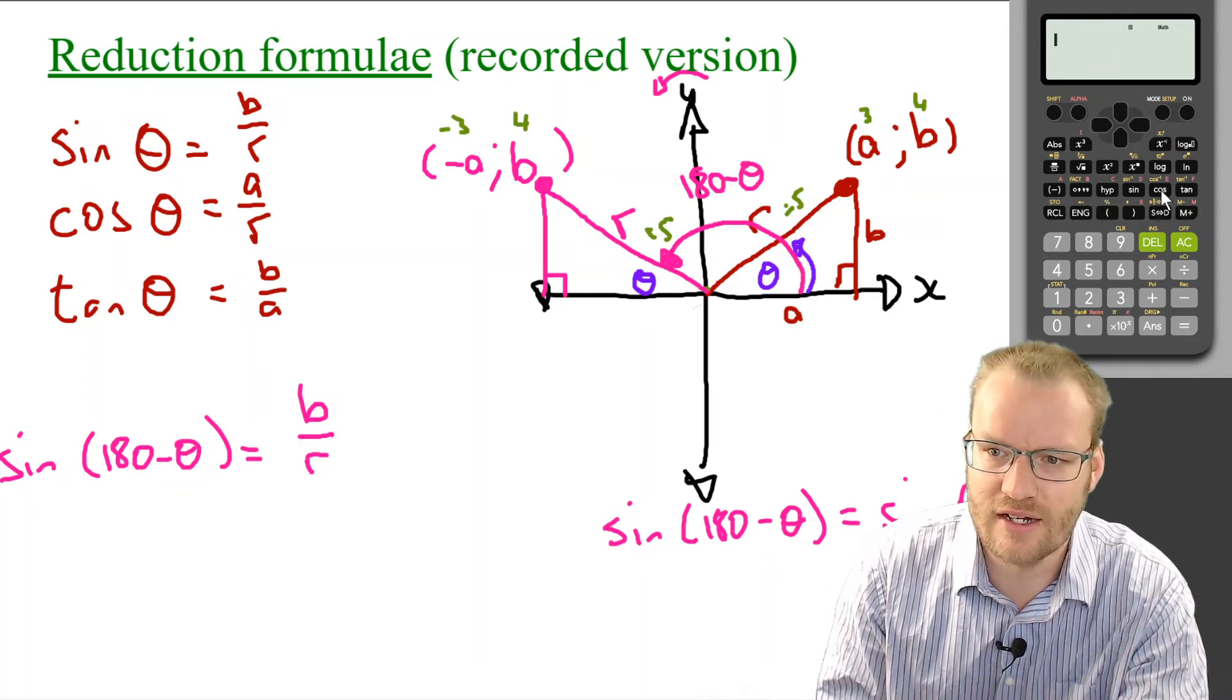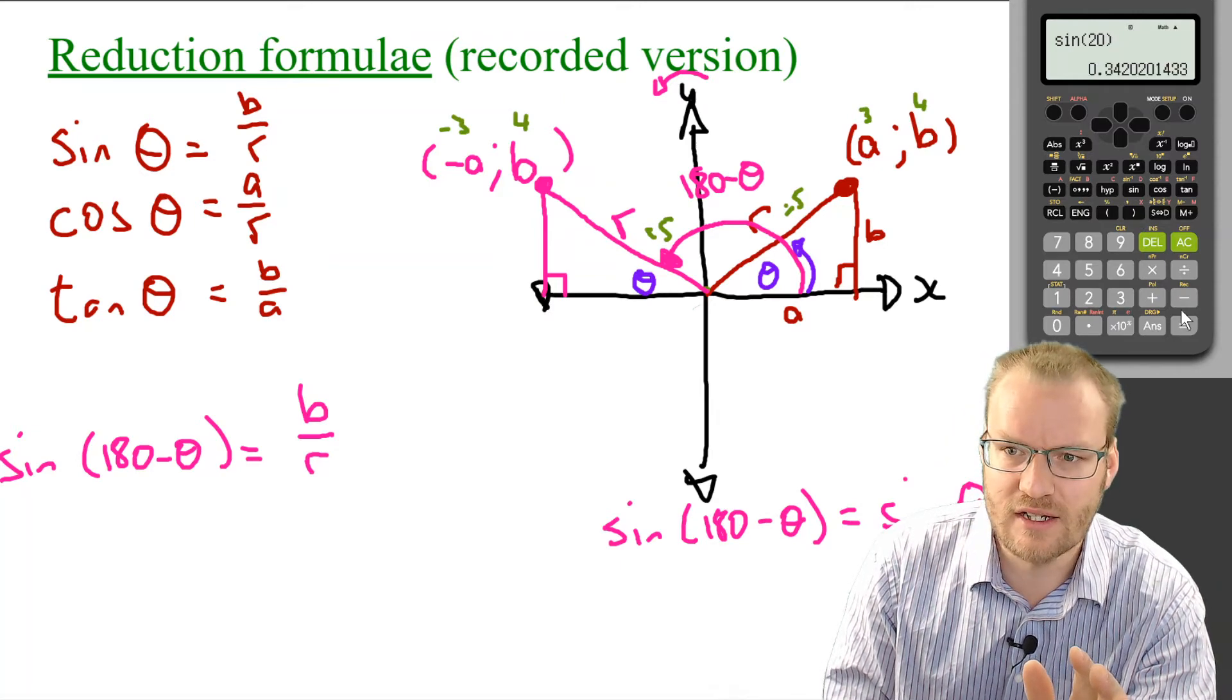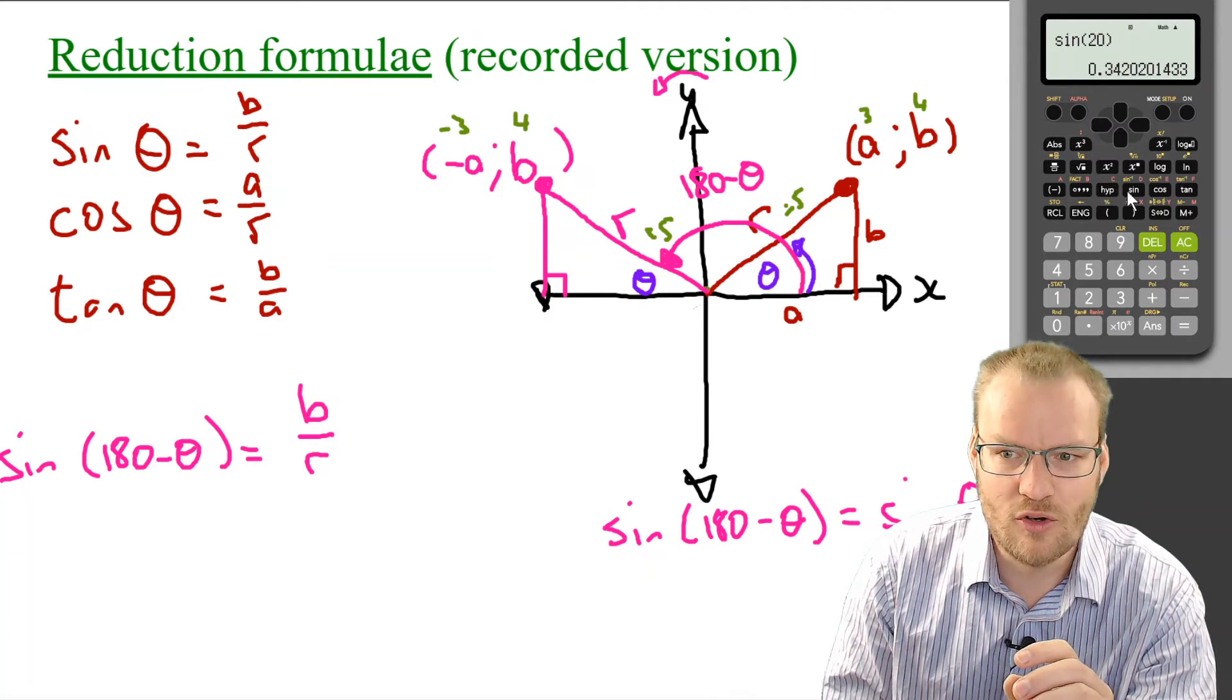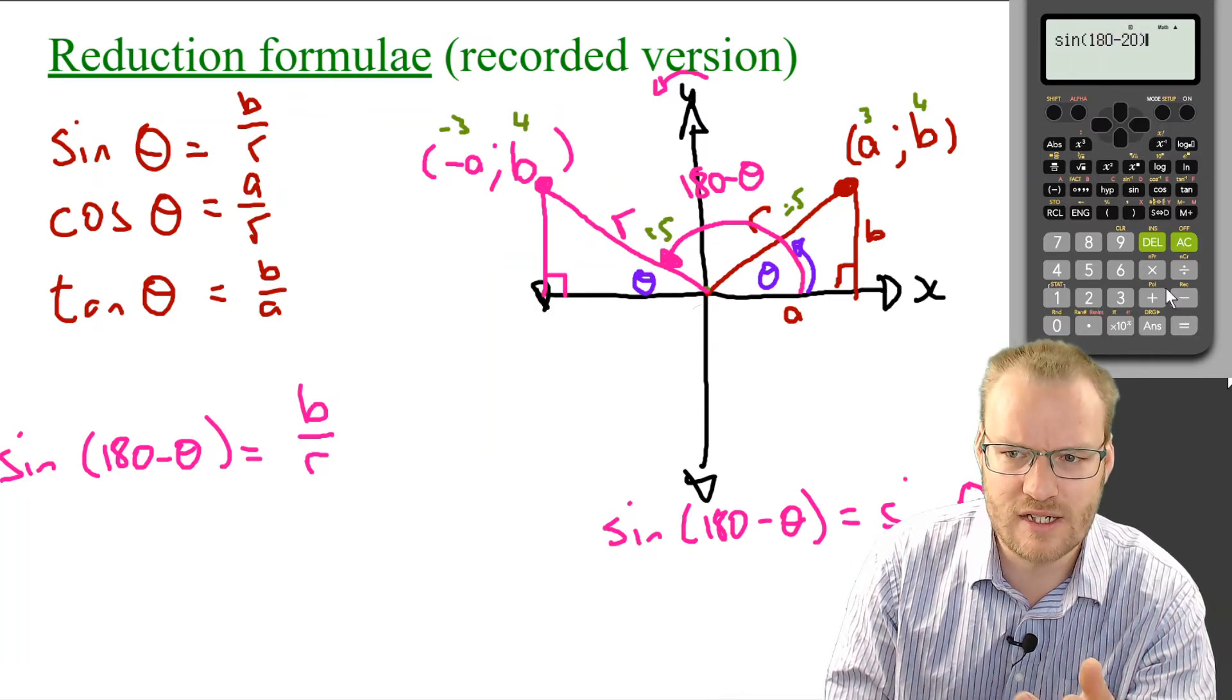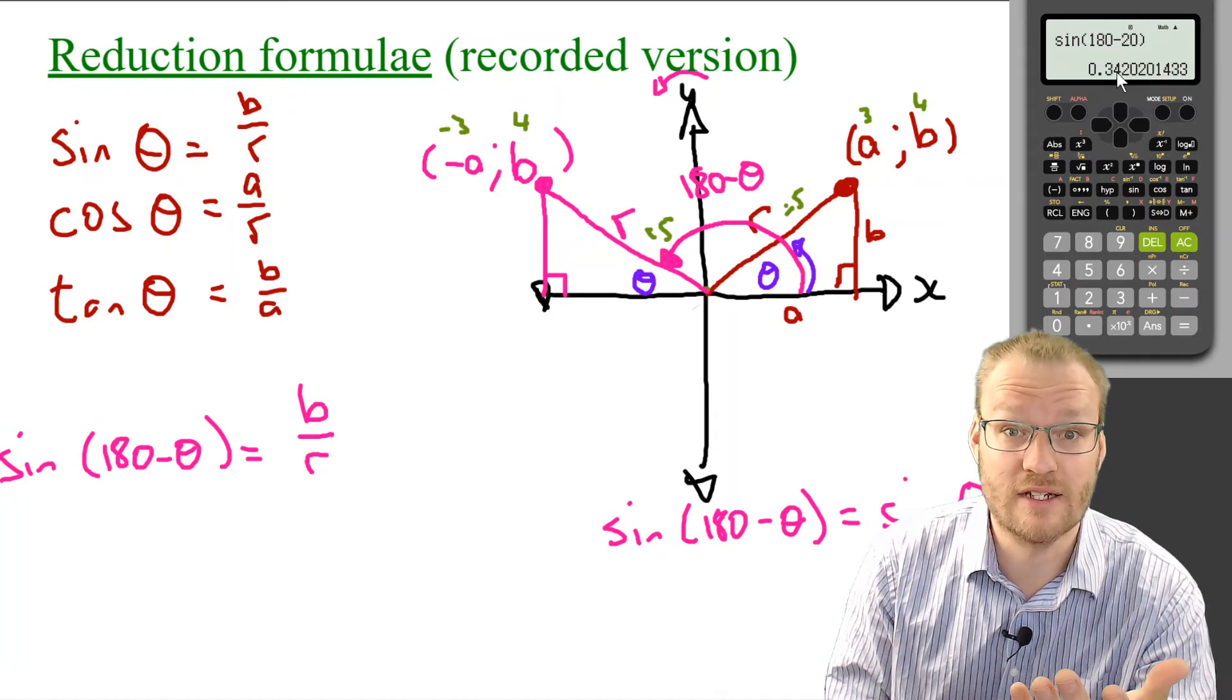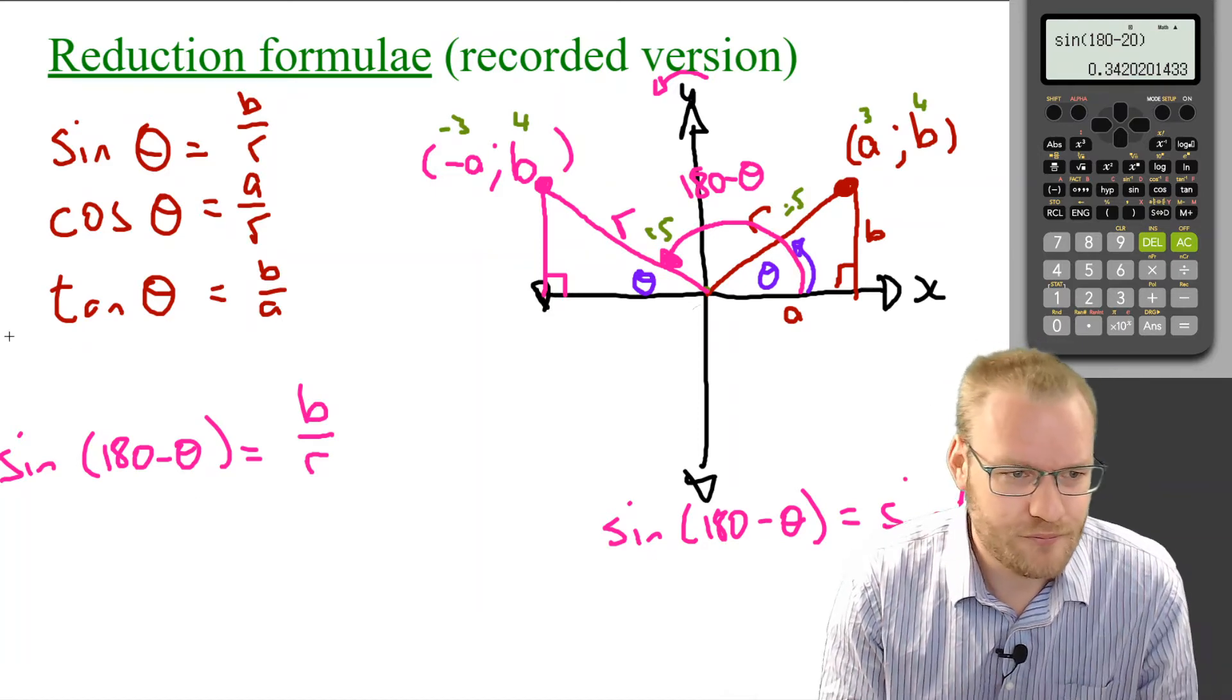And we could always check it. Let's say that we looked at sine of 20. So, don't worry about this calculator. But, if you're not sure, but sine of 20, 0.34. Just remember that part. So, let's compare that with sine of 180 minus 20. So, if theta were 20, it should be the same, 0.34. It's exactly the same. And that's what I talk about having the calculator there is almost a bit of a check.